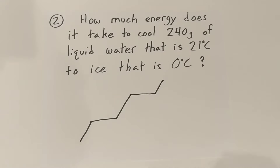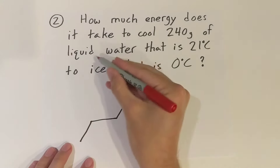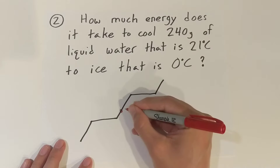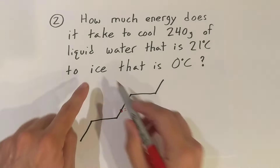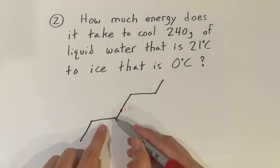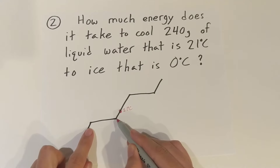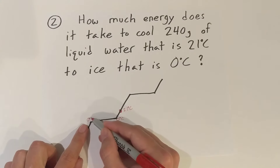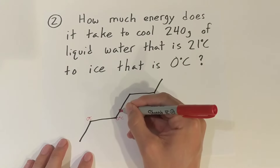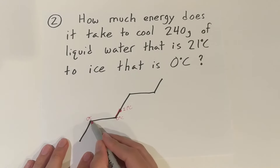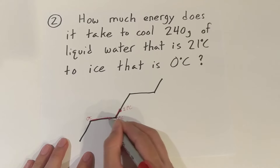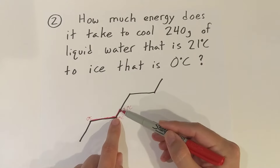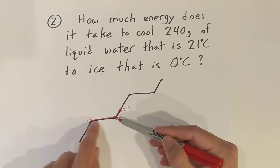We've got to figure out where we are and where we're going. We're starting out with liquid water at 21 degrees Celsius, so we're starting right about here. We're going to try to end at ice that is zero degrees. Remember, this is the freezing and melting point. Zero degrees here would still be water; zero degrees here would be ice. So we are going from this point all the way down to this point — a two-step problem.